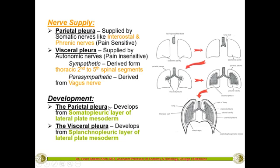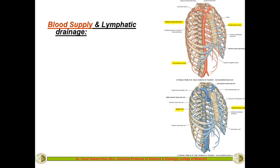The parietal pleura develops from the somatopleuric layer of the lateral plate mesoderm, and the visceral pleura develops from the splanchnopleuric layer of the lateral plate mesoderm. When you study development in other parts, you will understand what the somatopleuric and splanchnopleuric layers mean in better detail.